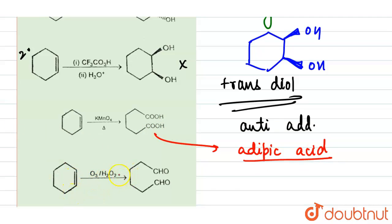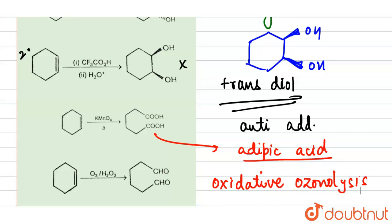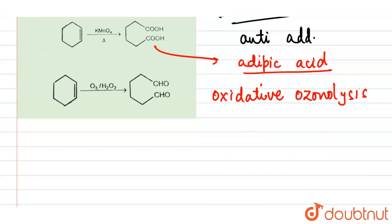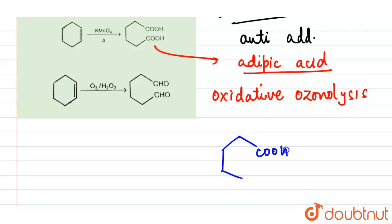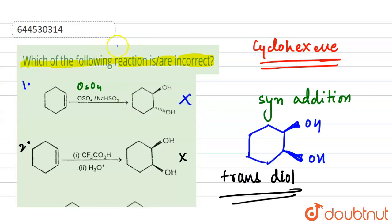In the last reaction, cyclohexene reacts with O3 followed by H2O2. Since H2O2 is used, this is oxidative ozonolysis. Under oxidative ozonolysis, we should get the formation of adipic acid — the same product as with KMnO4. However, the reaction as shown is incorrect, so this will also be part of our answer.